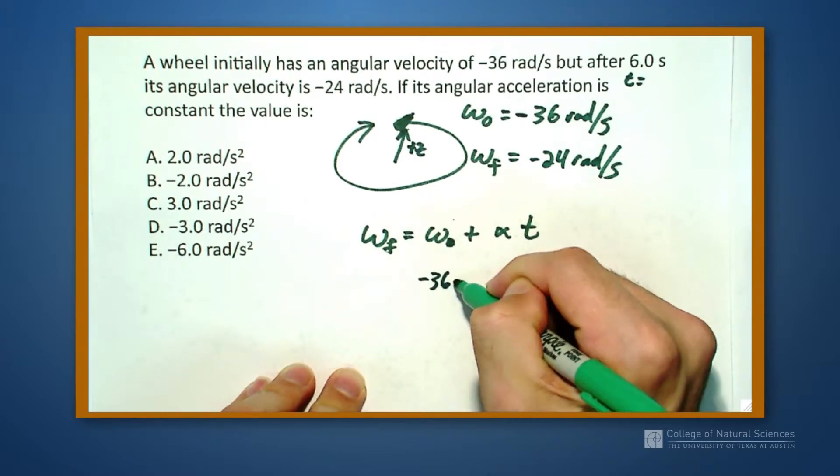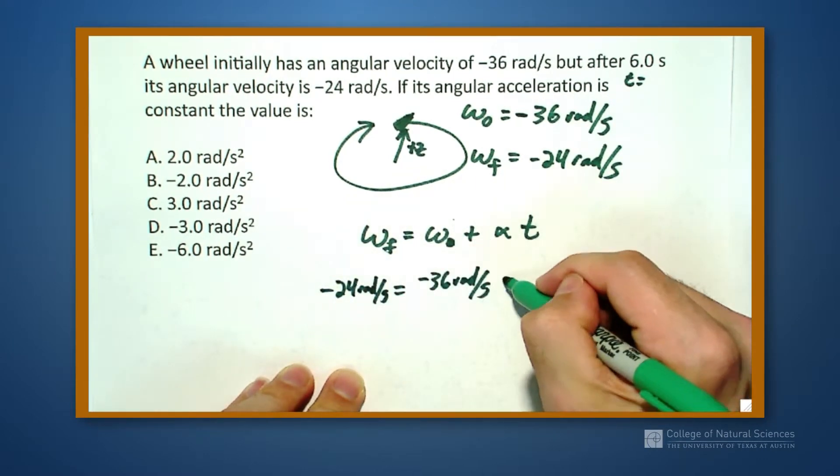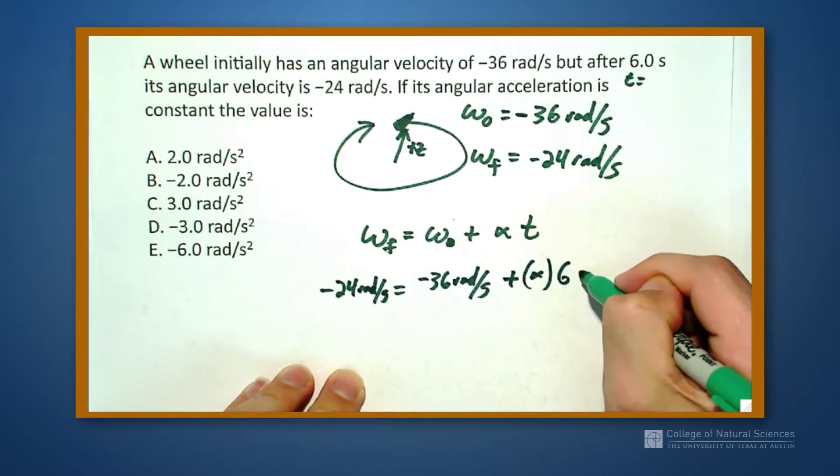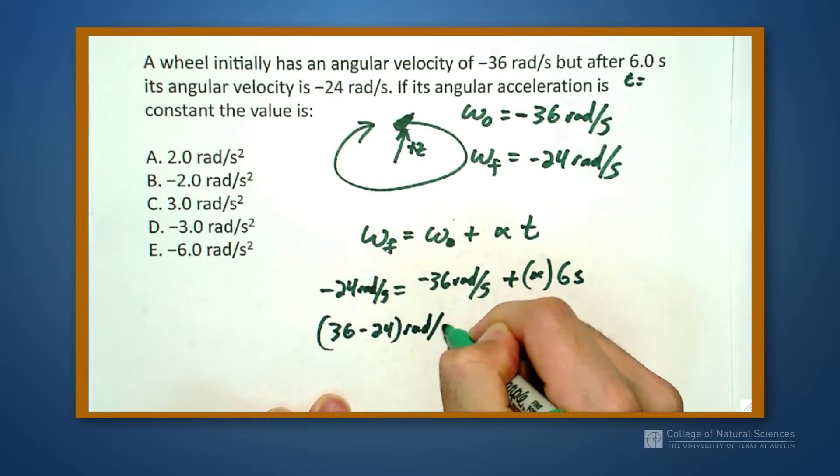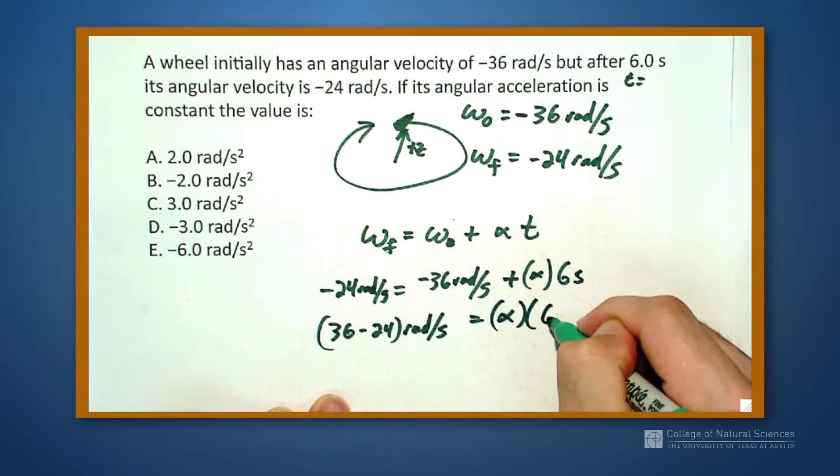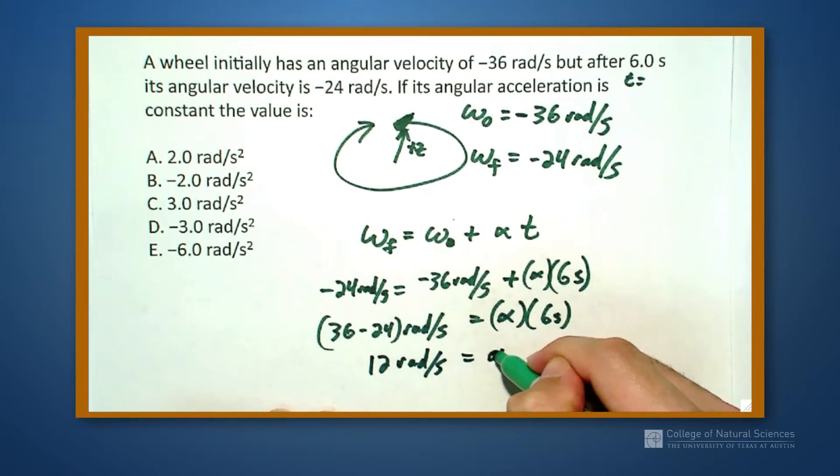So I put in minus 36 radians per second is going to be equal to minus 24 radians per second. And I have to add in my alpha times my 6 seconds. So I work this out minus 36 so I get 36 minus 24 radians per second is equal to alpha times 6 seconds. Or 2 radians per second squared is going to be alpha.